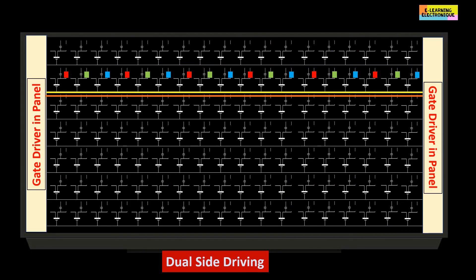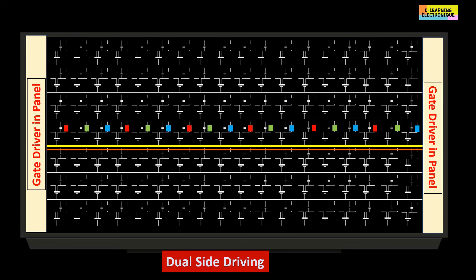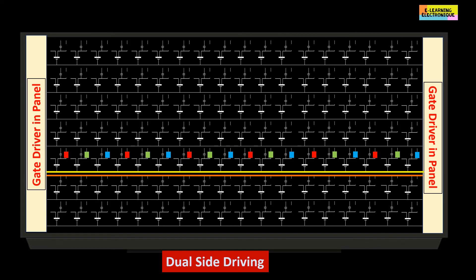In large screens, in order for the pixels placed on the same line to be activated at the same time, a bilateral scan is used. This technique is called dual side driving.